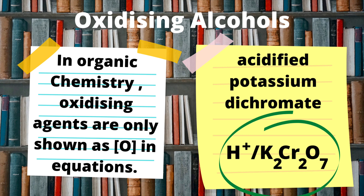You can sometimes also use sodium dichromate, and you may see that in some older past papers. If an oxidation reaction has taken place using acidified potassium dichromate, we would notice a color change of orange to green — a good way to remember that is OMG: orange makes green. In reaction equations, we don't write out the full formula H⁺/K₂Cr₂O₇. Instead, to keep things simple and focus on the organic molecule, we just use an O in square brackets to represent our oxidizing agent.